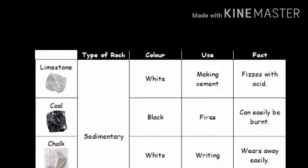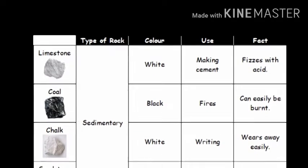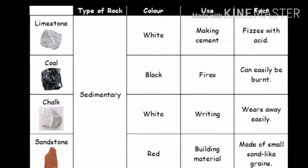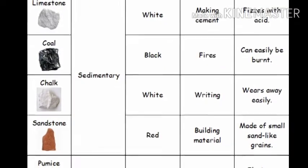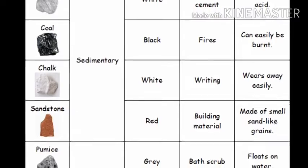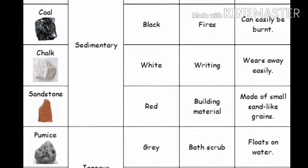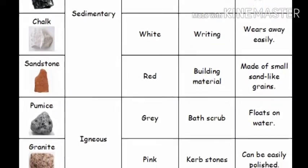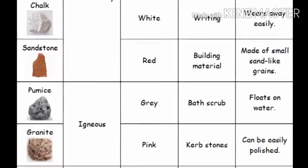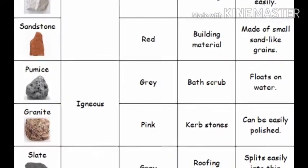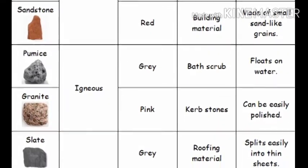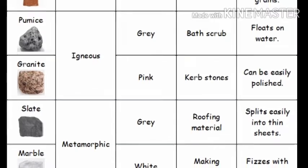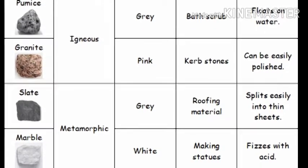In this chart I have different types of rocks with their color, uses, and facts. Limestone is a type of sedimentary rock; it is white in color and is used in making cement. Coal is black in color and is used for fuel — it can easily be burnt. Slate is a type of metamorphic rock; it is gray in color, used for roofing material, and splits easily into thin sheets.